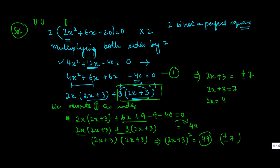When 2x + 3 = 7, then 2x = 4, so x = 2. When 2x + 3 = -7, then 2x = -10, so x = -5.